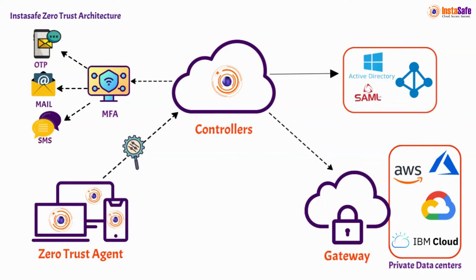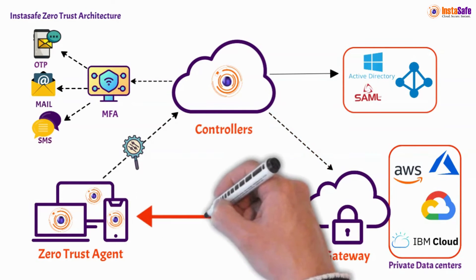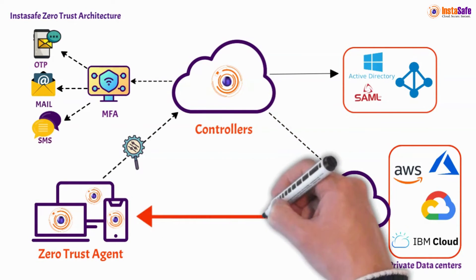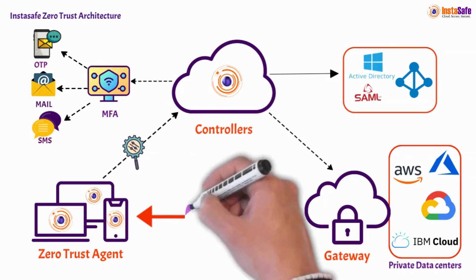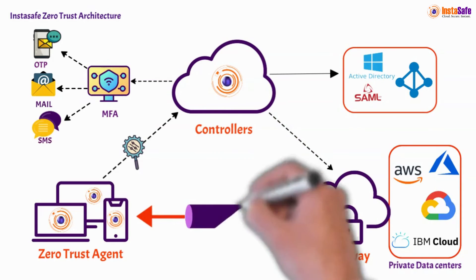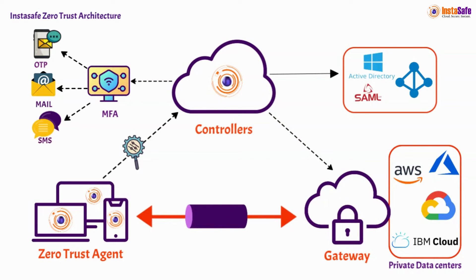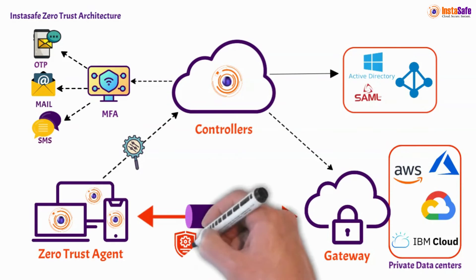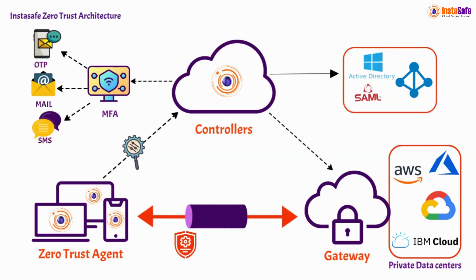The ZTEA Client comes with inbuilt multi-factor authentication for additional security. On successful verification, the controller grants permission to the user to connect with the gateway. Once the controller has successfully authenticated the user, a tunnel is established between the user's device and the gateway. The user can now access applications configured for them through the ZTEA Client. All traffic is carried out on an AES 256-bit encrypted tunnel.